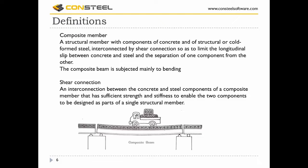Let's start with the definitions. What is a composite member? It is a structural member with components of concrete and structural or cold-formed steel interconnected by shear connection, so as to limit the longitudinal slip between concrete and steel and the separation of one component from the other. A composite beam is subjected mainly to bending.